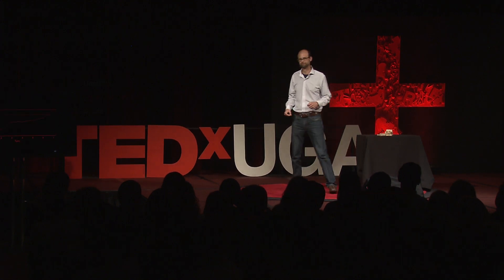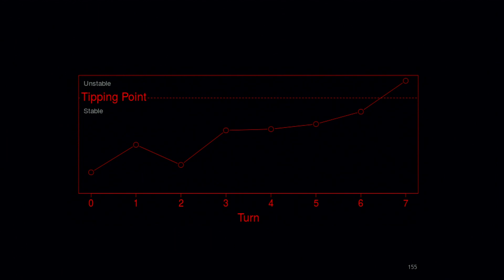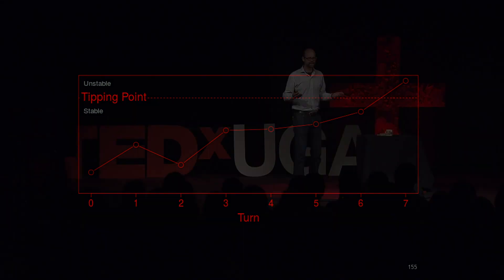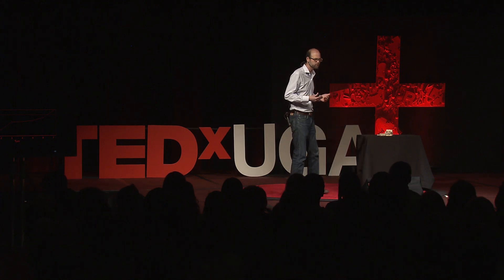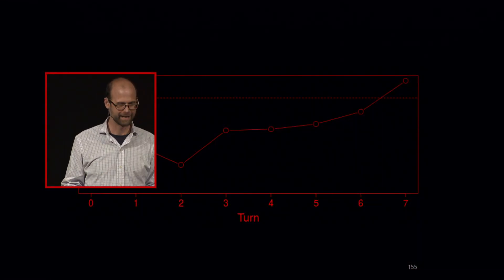An interesting thing happened. Our data show that we were able to predict the approach to the tipping point. The figure shows the magnitude of the wobble we calculated against each turn in a real game of Jenga. As it crosses the dashed line, that's when it crosses the tipping point and falls over. We could look at these data and predict it would be between turns 6 and 7 that the tower would fall — and we got the answer exactly right.